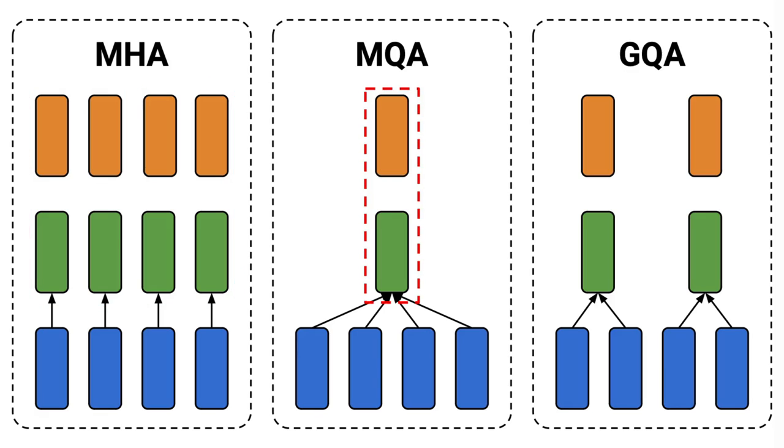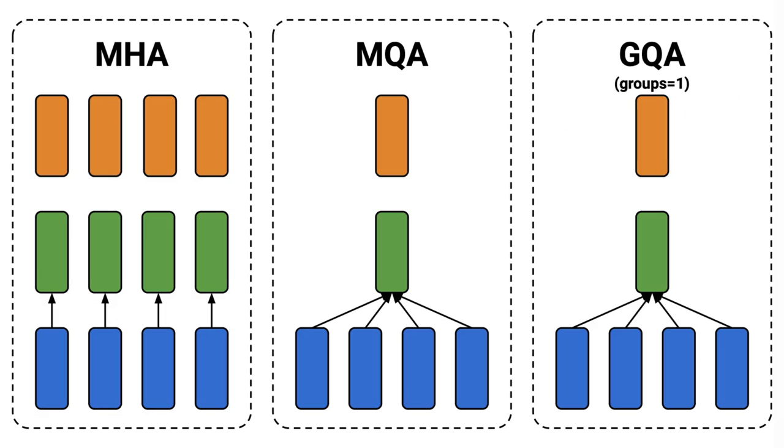In the multi-query attention, we have a single share key and value matrix. And, in the group query attention, we divide the heads into subgroups and use a single share key and value matrix in that subgroup. If we were to set the number of subgroups to be equal to 1, then the group query attention would be identical to the multi-query attention.